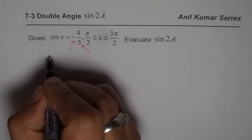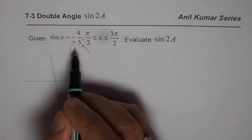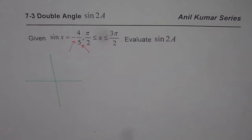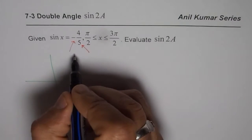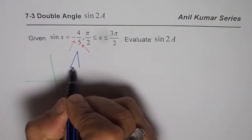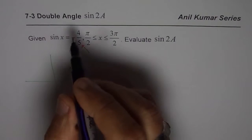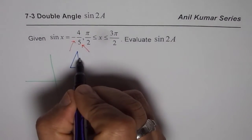Now let's analyze this part. 4 over 5 means we are talking about a triangle. Always consider the triangle in the first quadrant. It becomes easy for us to write expressions. Sine is opposite over hypotenuse. So the opposite side here is 4.